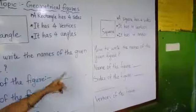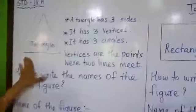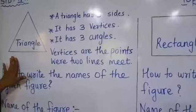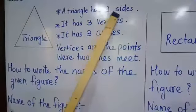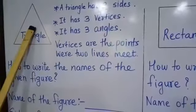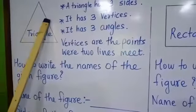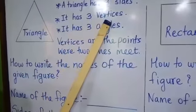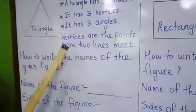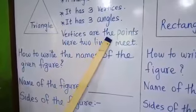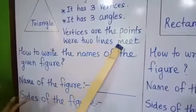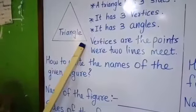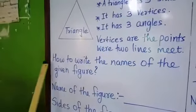What is a triangle? How do we know that it is a triangle? There are three properties. A triangle has three sides — one, two, and three. It also has three vertices. Vertices are the points where two lines meet, meaning where one line and another line come together.